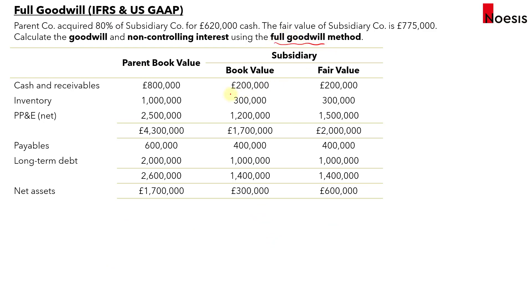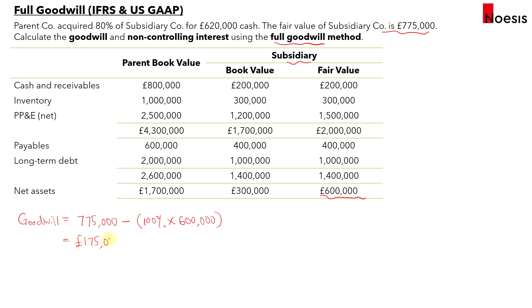Under the full goodwill method, goodwill equals the fair value of the subsidiary of £775,000 — representing a 100% acquisition assumption — minus 100% of the identifiable net assets of £600,000, giving goodwill of £175,000. This is the goodwill recorded under the full goodwill method.